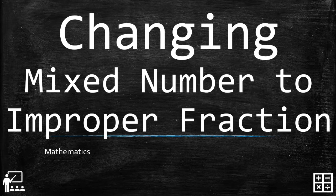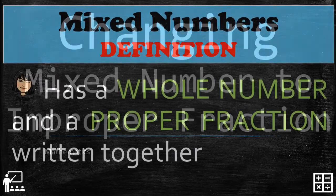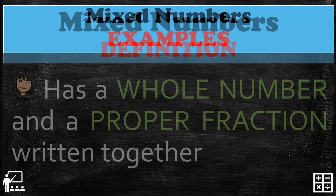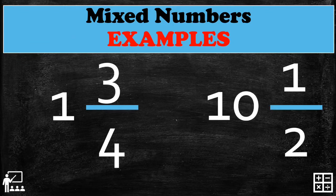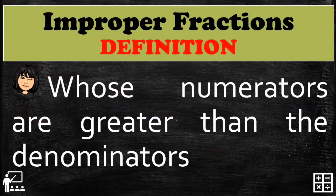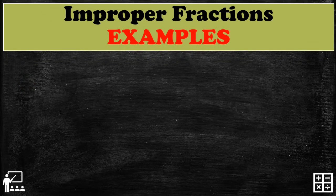This video lesson is about changing mixed numbers to improper fractions. In my previous lesson, I identified that a mixed number has a whole number and a proper fraction written together. An improper fraction is one whose numerator is greater than the denominator. These are some examples of improper fractions.